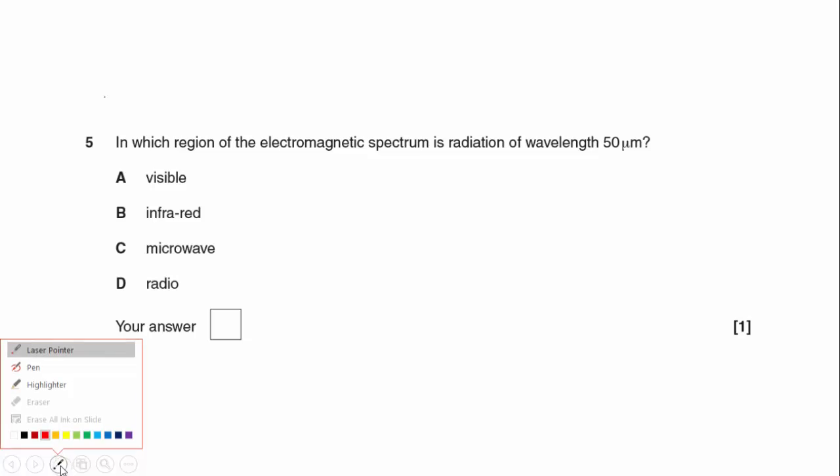So this is one of these ones that you've got to learn the actual wavelengths. So visible light, if we put these into metres, that's going to be 4 times 10 to the minus 7 to around about 7 times 10 to the minus 7.